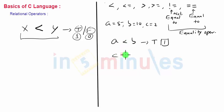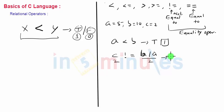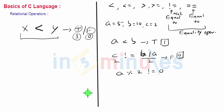Now suppose we write c is not equal to b divided by a. In this expression, c is 2 and b divided by a is also 2, so 2 not equal to 2 is actually false — that is, the answer is 0. We can also check something like a mod 2 is not equal to 0. Here, a mod 2 is 5 mod 2, whose answer is 1. And 1 not equal to 0 is true, hence the answer will be 1.